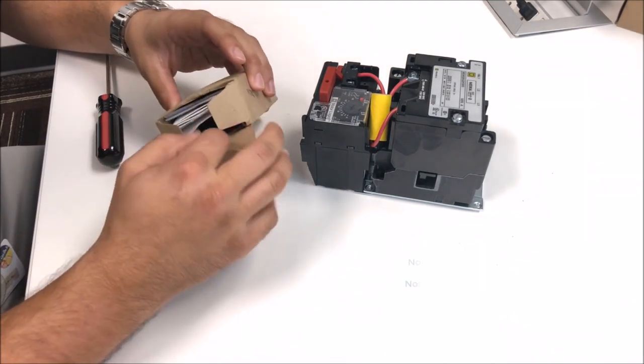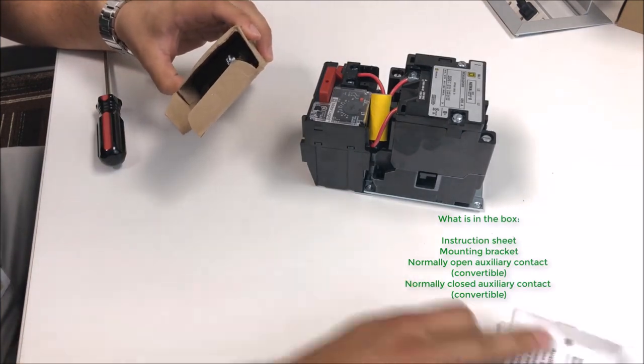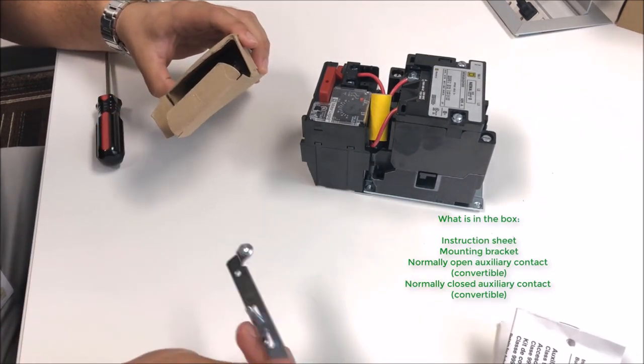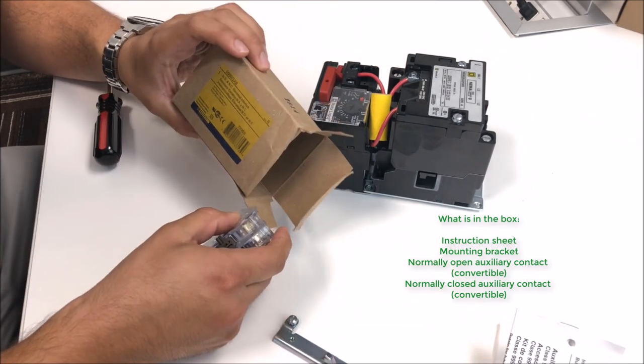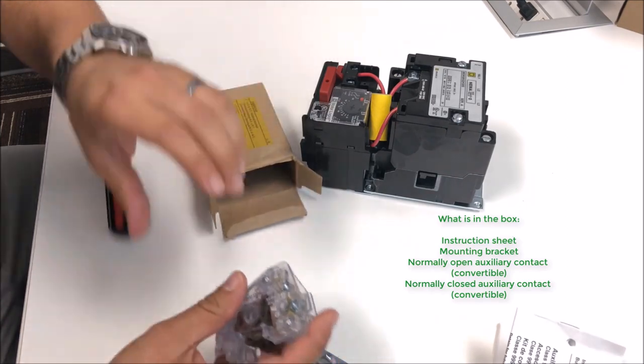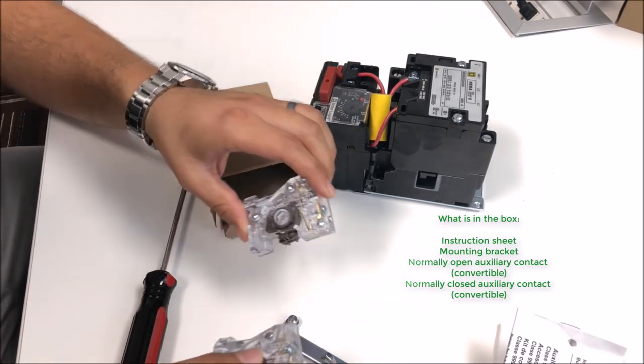We'll open the box. Inside the box you'll get an instruction sheet, a mounting bracket with mounting screw, and for the SX8 that I have here you'll get a normally open auxiliary contact and a normally closed auxiliary contact.